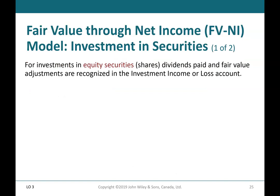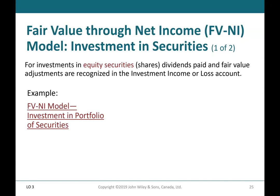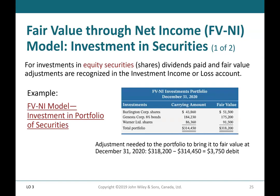FV-NI model — investment in securities, Part 1 of 2. For investments in equity securities or shares, dividends paid and fair value adjustments are recognized in the investment income or loss account. Example — FV-NI model, investment in portfolio of securities: a list of investments at their carrying amount and fair value as at December 31, 2020 shows an adjustment needed of $3,750 debit. Fair value adjustment at year end: debit fair value through NI investments $3,750; credit investment income or loss $3,750.